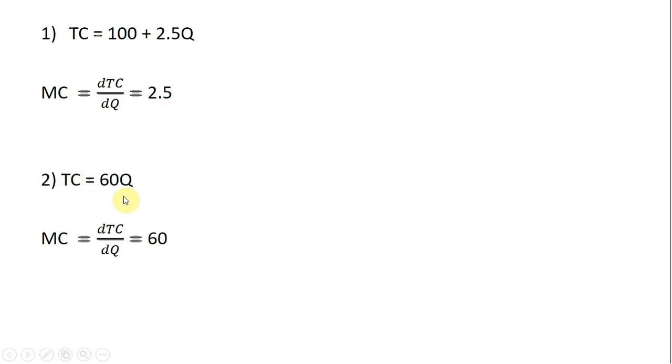Here's another total cost equation, one without fixed cost. Total cost equals 60Q. The derivative of this gives us marginal cost, and we see marginal cost in this example is constant at $60. Again, every one more unit of output produced raises the firm's total cost or total variable cost by $60.